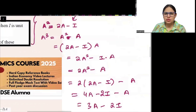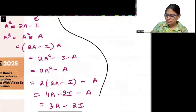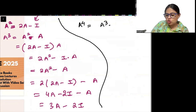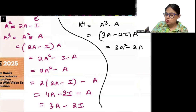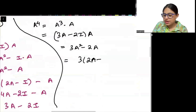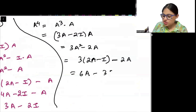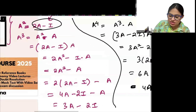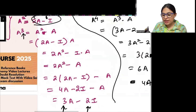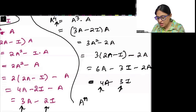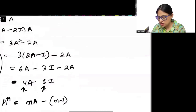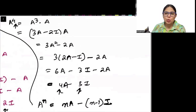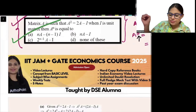Are we seeing a pattern? Let's find A to the power 4 = A³ × A = (3A − 2I) × A = 3A² − 2A = 3(2A − I) − 2A = 6A − 3I − 2A = 4A − 3I. So for power 2 we see coefficient 2 and constant 1; for power 3: coefficient 3, constant 2; for power 4: coefficient 4, constant 3. So A^N = N·A − (N−1)·I. The correct answer is option A.